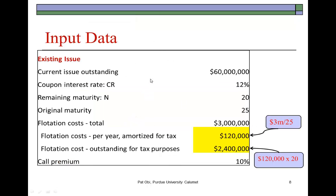Here is a summary of the input data. The current bond outstanding is $60 million face value, paying 12% annual coupon. Remaining maturity is 20 years, original maturity was 25 years. At the time of issue five years ago, this company paid the investment banker $3 million to float this bond. For tax purposes, this amount is split over the 25-year original maturity, so $3 million divided by 25 years equals $120,000 written off per year.